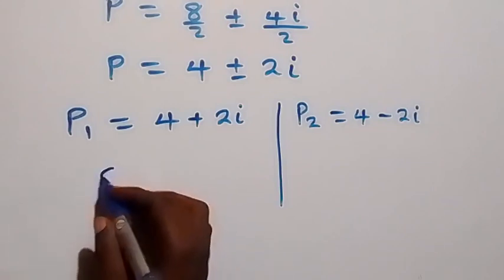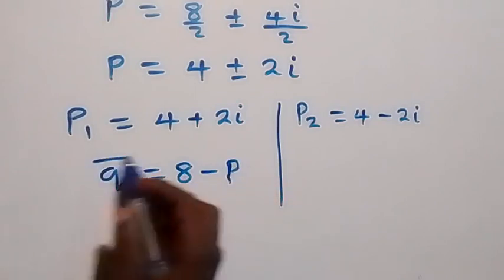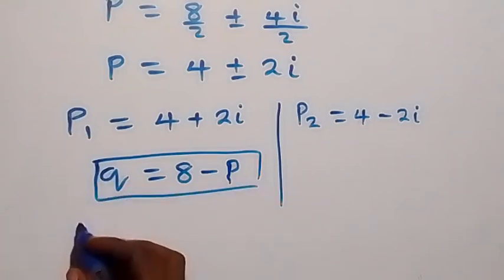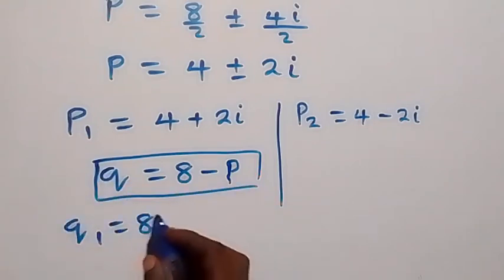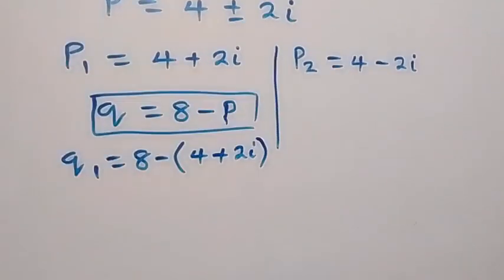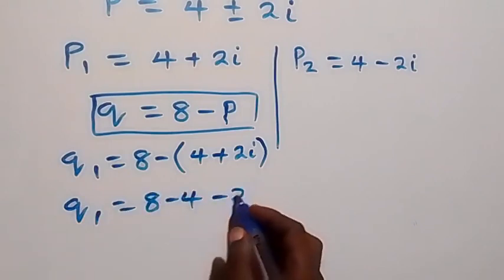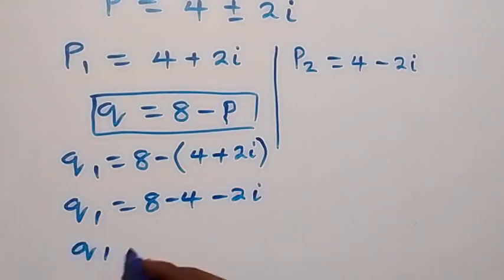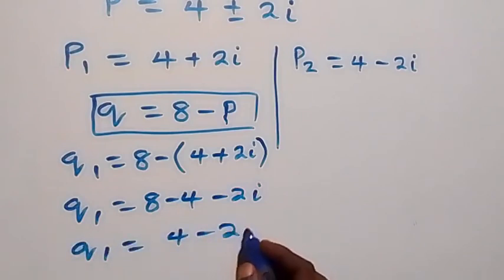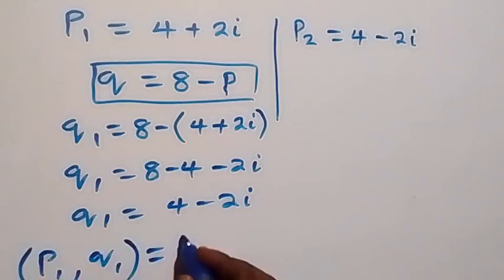From these values we can find the corresponding values of q using the relation q equals 8 minus p from equation 1. For q1, we have q1 equals 8 minus p1, which is 8 minus (4 plus 2i). Opening the bracket gives q1 equals 8 minus 4 minus 2i, so q1 equals 4 minus 2i. So the first solution set is (p1, q1) = (4 + 2i, 4 − 2i).